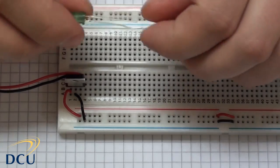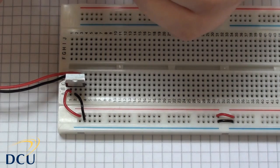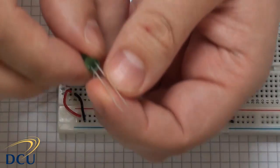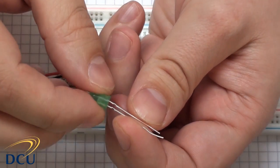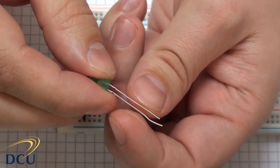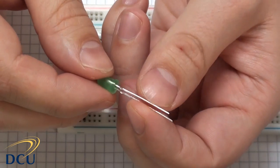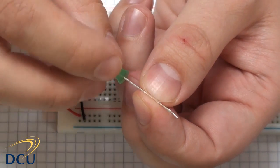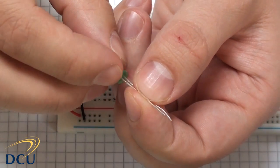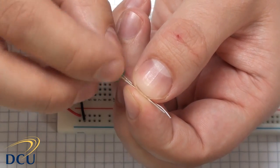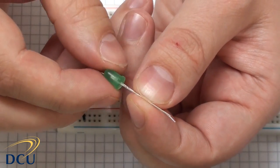So with our LED, we see that we have two legs. One leg is longer than the other. The longer leg is the anode, and that's the positive leg. The shorter leg is the cathode, and that's the negative leg. You'll also notice if you look very carefully at the plastic housing of the LED, that there's a little flat area here at the top, and that indicates that that's the negative pin or the cathode.